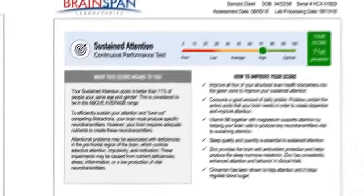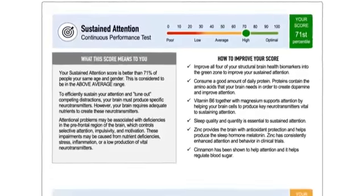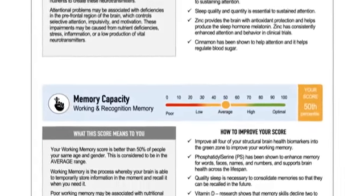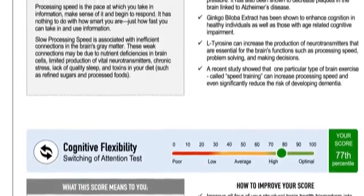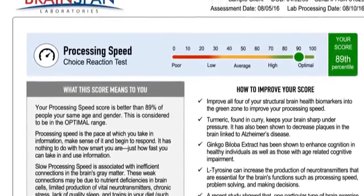The results of the cognitive function assessment are described to include the areas of attention, processing speed, and memory, linking them back to the nutritional metrics and specific lifestyle recommendations, making them more meaningful and motivating.